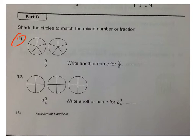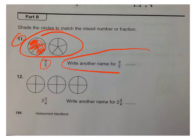Number 11. Shade the circles to match the mixed number or fraction. Here is your mixed number. Remember one whole area would be 1. If I shade in everything in here, it's 1. So how much would I have to shade in of both of these to get 9 fifths? And then write in the other name for 9 fifths as a mixed number. So you'll have a whole number and then a fraction.